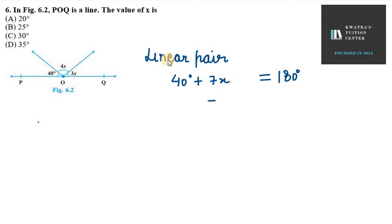Let's take 40 on the other side. So, 7x equals 140 degrees. So, x equals 20.